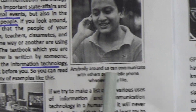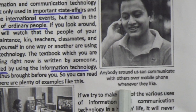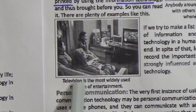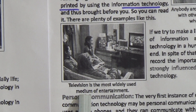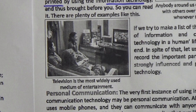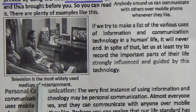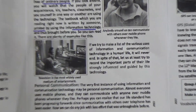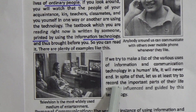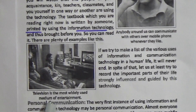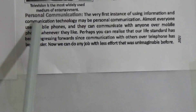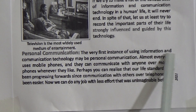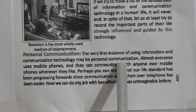Here is a picture — anybody around us can communicate with others over mobile phone whenever they like. There is another picture: television is the most widely used medium of entertainment. In the past, only television was used, but now information and communication technology gives us lots of entertainment systems. The very first instance of using information and communication technology may be personal communication.